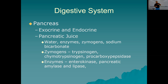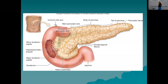The pancreas makes all three enzyme types — proteases, lipases, and amylases — whereas the salivary glands make amylase and lipase, and the stomach makes lipase and a protease. There's a main pancreatic duct and an accessory pancreatic duct. The accessory pancreatic duct empties into the minor duodenal papilla. The main pancreatic duct combines with the common bile duct to form the hepatopancreatic ampulla, which empties into the duodenum at the major duodenal papilla.